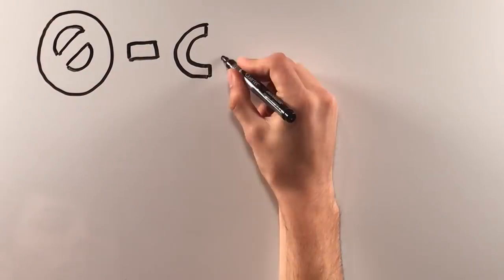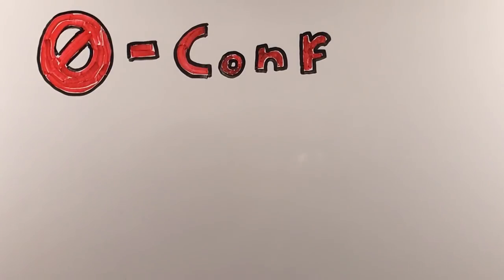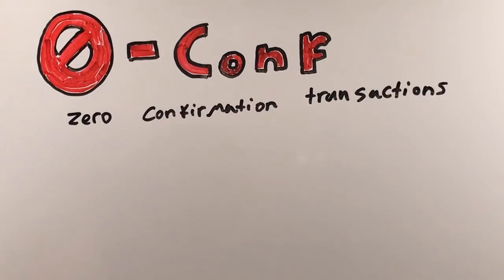This is not the way Bitcoin transactions were originally intended to work. Before 2015, the majority of Bitcoin transactions were instant. This feature was called zero-conf for zero confirmation transactions.